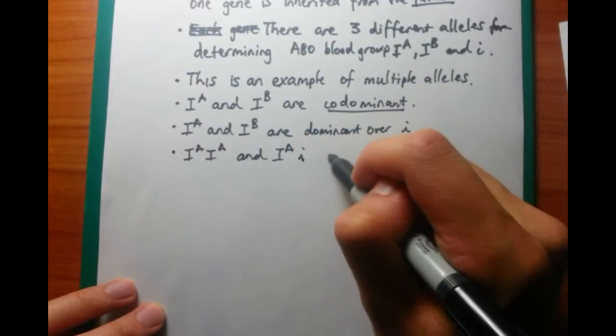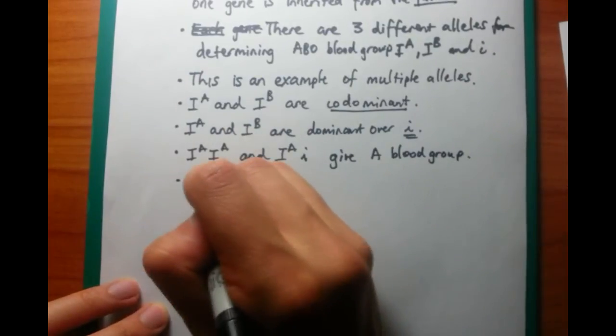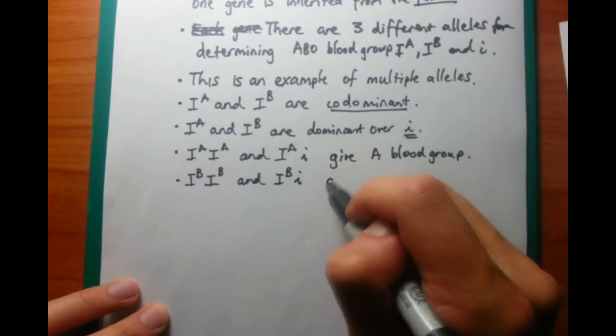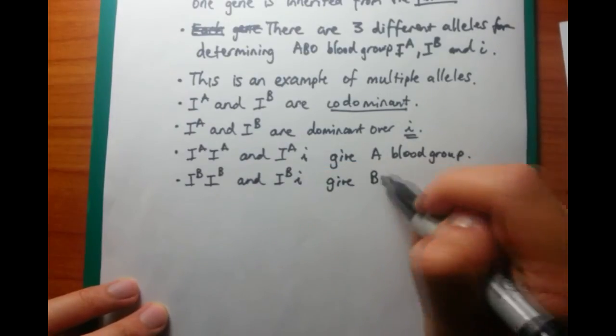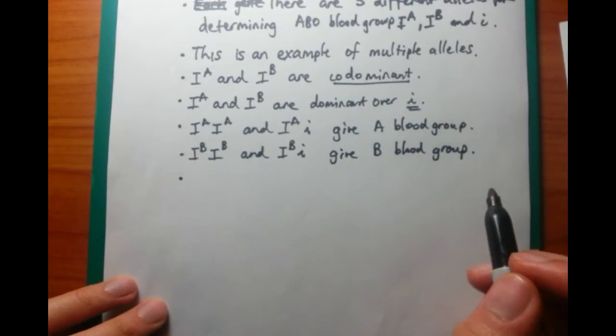So say, for example, if we had an individual who had a genotype of I^A and i, then they would have a phenotype that would have a blood group of A. The little i would be ignored. And it's only when you have little i, little i together that you get an O blood group.